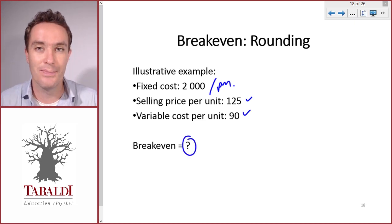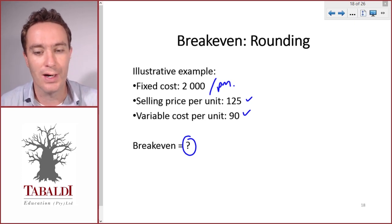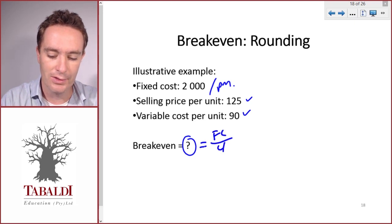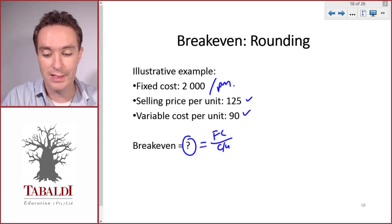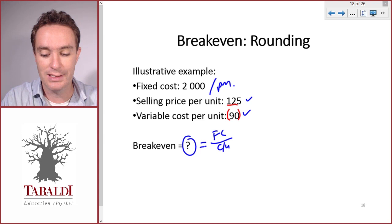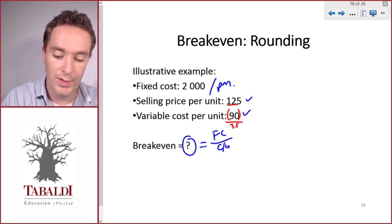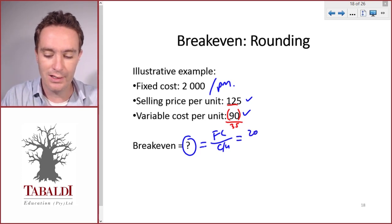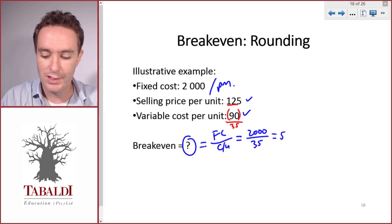Let's first calculate the breakeven point or the breakeven units. How many bicycles do we need to sell in order to break even? The formula is fixed cost divided by contribution per unit. We can quickly calculate contribution per unit: that's our selling price of 125 less our variable cost of 90, so our contribution would be 35 per unit. In our breakeven calculation, 2,000 divided by contribution of 35 equates to 57.14.